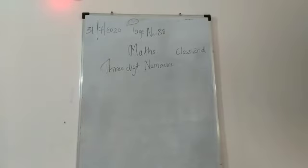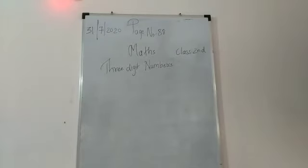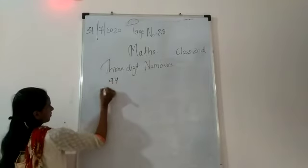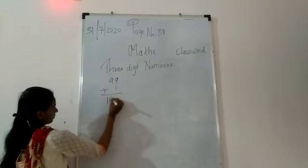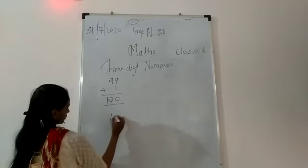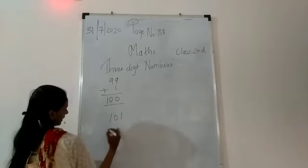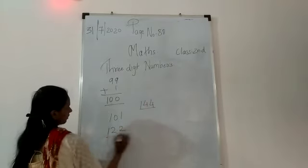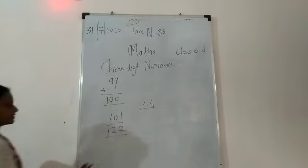Good morning students. We are going to see the next lesson, that is 3-digit numbers. Take number 88. So 3-digit number means if I say 99 plus 1 will become 100. So that is 101, 122, 144 — these are all 3-digit numbers.